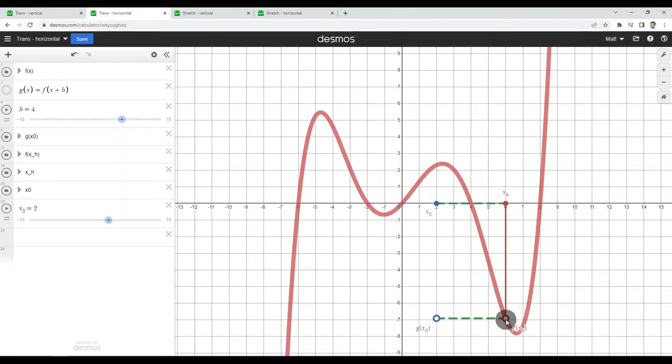So g of two is actually down here at this almost negative seven value. The way I think of that is I wouldn't have gotten to this height in the graph until six normally, but I jumped ahead and got it four earlier. Four units earlier than I would have, so I'm getting the graph to show up four units earlier, which means it's shifted four units to the left.